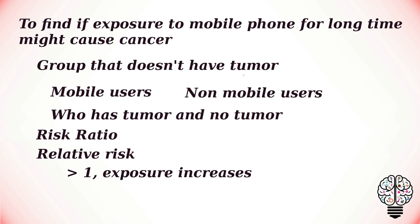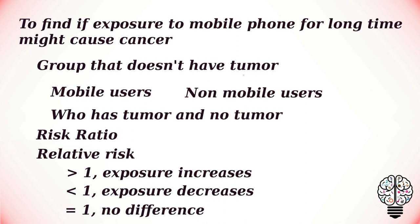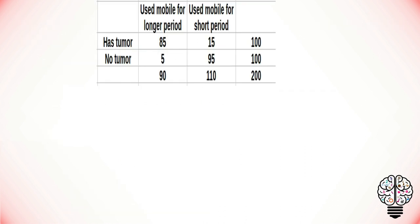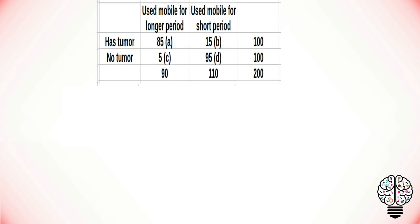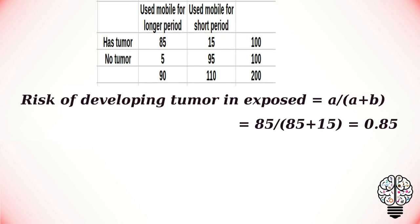If the relative risk is greater than one, then the exposure increases the risk of the disease. If it is less than one, the exposure decreases the risk. If it is equal to one, there is no difference in risk. This data shows whether people who use mobile phones for a long or short time develop a tumor or not, and we label this data as a, b, c, and d.